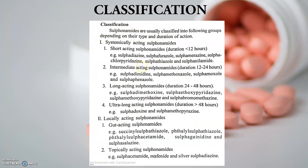This picture is taken from the same book. The classification has two main types: systemically acting and locally acting sulfonamides. The locally acting sulfonamides are further divided into two categories — gut acting sulfonamides, which act on the stomach or intestine, and topically acting sulfonamides, which act on the surface and do not have any systemic use.